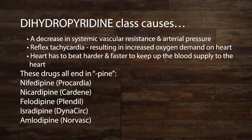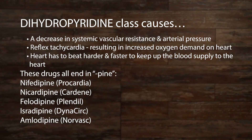The dihydropyridine class is the most smooth muscle-selective class of calcium channel blockers. They decrease the systemic vascular resistance and arterial pressure, and are primarily used to treat hypertension. However, the vasodilation and hypotension effects can lead to reflex tachycardia, which results in increased oxygen demand on the myocardium. Because vasodilation decreases the blood returning to the heart, the heart has to beat harder and faster, and too much vasodilation causes reflex tachycardia.